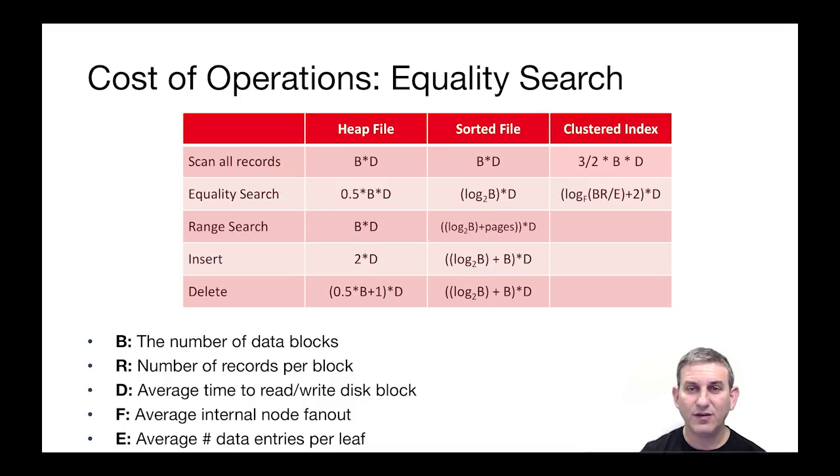So updating our table, we can see here the cost of a quality search over on the right, and it's quite a bit nicer than the cost of the sorted file because the logarithm is now base F, which is a fairly big number rather than base two. And so we got the win we were looking for.